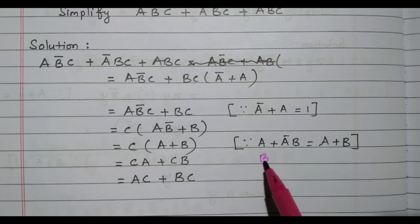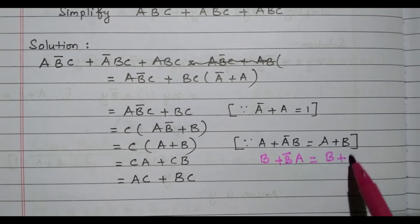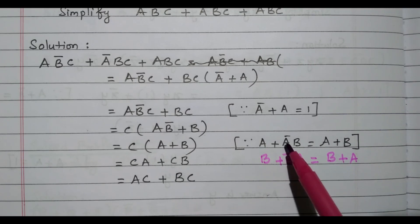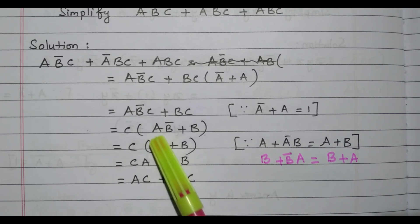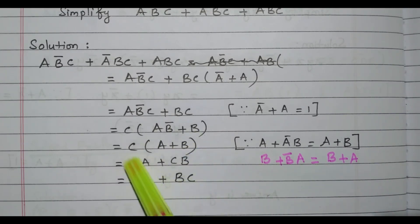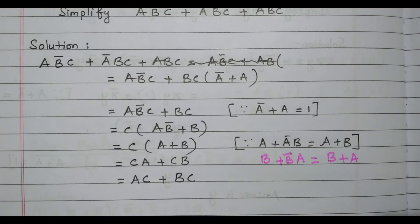So the expression simplifies to c(a + b). Distributing c inside: c · a + c · b, which gives us ac + bc. So the final simplified expression for Problem 2 is ac + bc. In this video we discussed two problems for the reduction of switching equations using Boolean algebra simplification method.